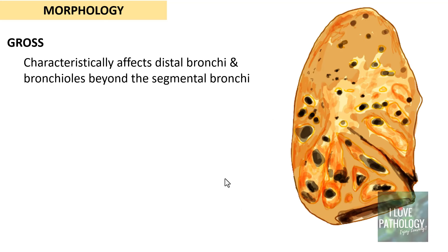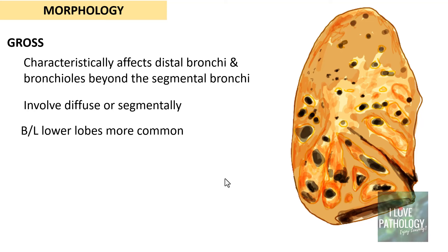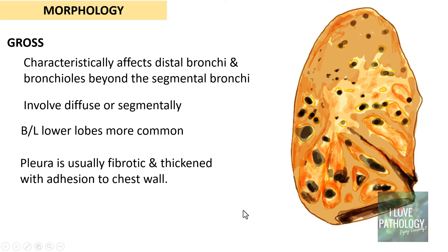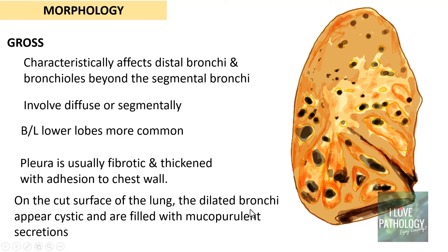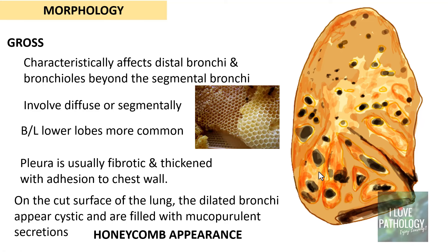Looking at the gross morphological features: bronchiectasis characteristically affects distal bronchi and bronchioles beyond the segmental bronchi. It involves the lungs either segmentally or diffusely, most commonly in the bilateral lower lobes. The dilated bronchi and bronchioles are visible here. The pleura is usually fibrotic and thickened with adhesions to the chest wall. On the cut surface, the dilated bronchi appear cystic and are filled with mucopurulent secretions. This cystic appearance in the lower lobe is referred to as honeycomb appearance.